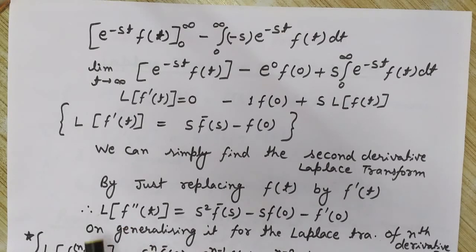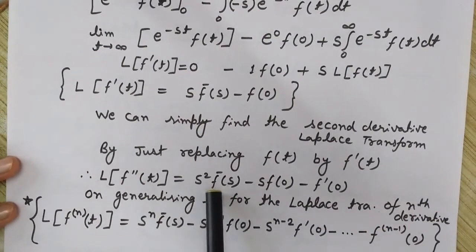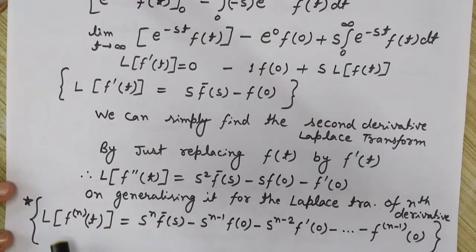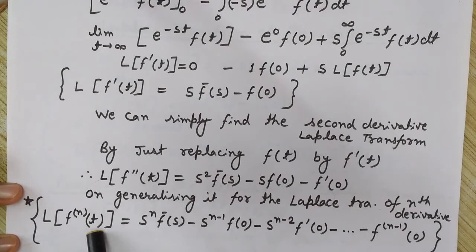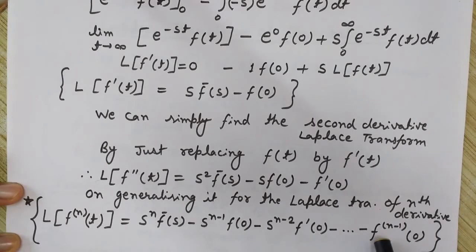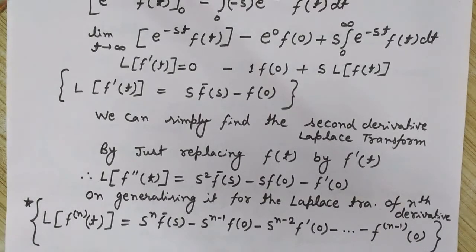Therefore, the Laplace transform of the second derivative of f(t) would be s² · f̄(s) minus s · f(0) minus f'(0). Generalizing for the nth derivative, the Laplace transform of the nth derivative of f(t) is s^n · f̄(s) minus s^(n-1) · f(0) minus s^(n-2) · f'(0) minus ... down to f^(n-1)(0). Hence it is proved. I hope you found it useful.